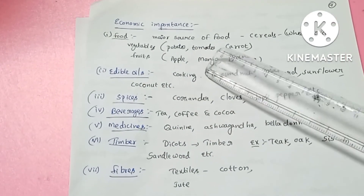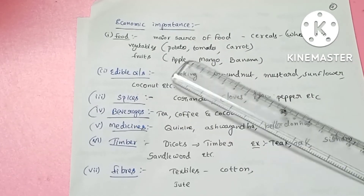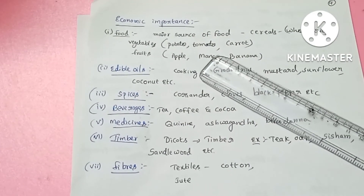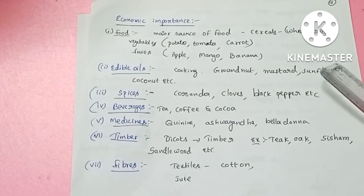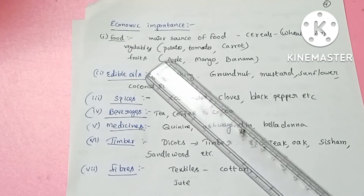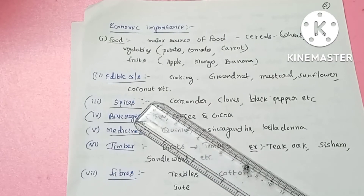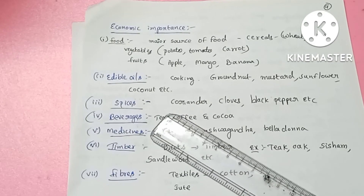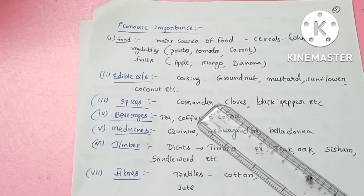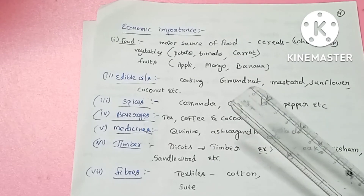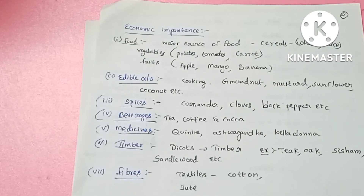Angiosperms are a major source of food: we get cereals like rice and wheat, vegetables, and fruits from angiosperms. We also get cooking oils — edible oils — from coconut, mustard, and sunflower, all of which are angiosperms.